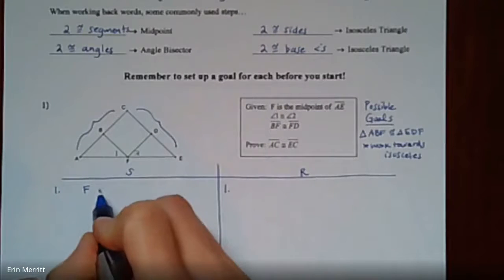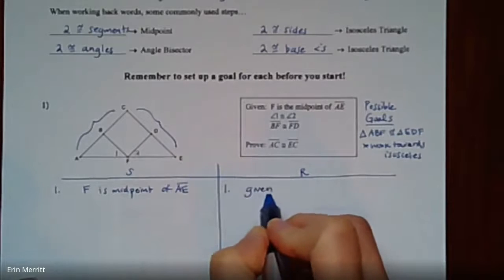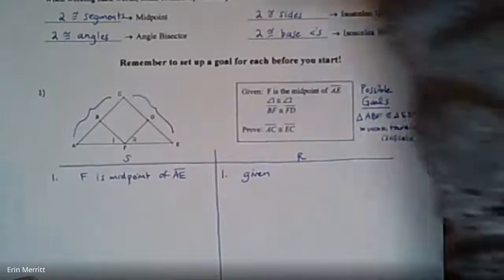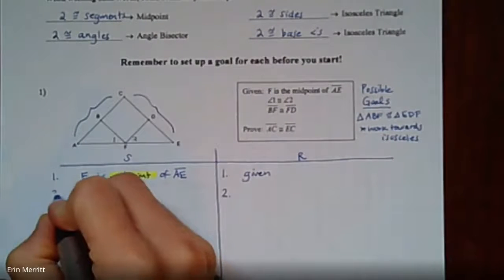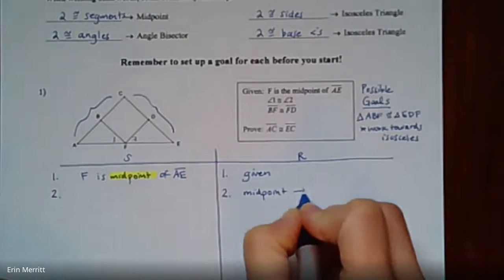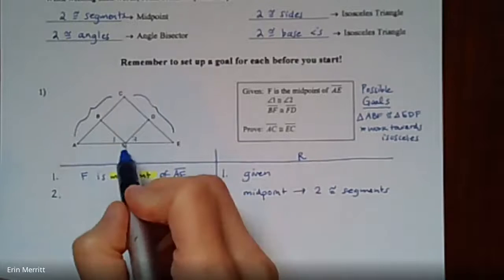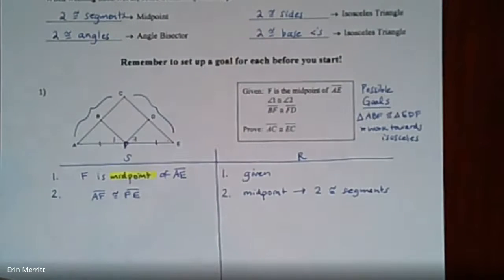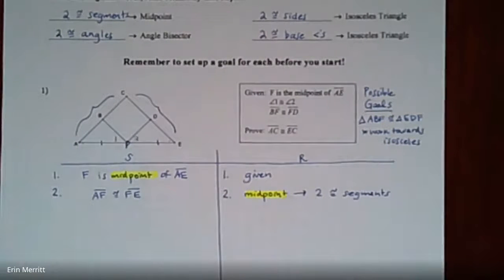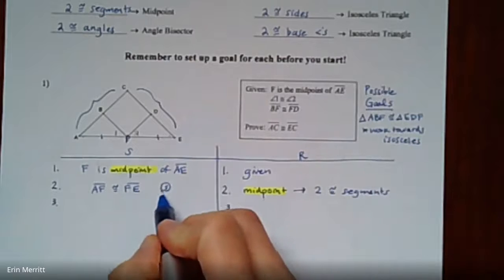Let's see where the givens take us. F is the midpoint of segment AE — that's given. Midpoint is our vocab term, so step two talks about that midpoint: midpoint implies two congruent segments. Looking at the picture, F is the midpoint of AE, so our two congruent segments are AF and FE. That's possibly a pair of sides in the little triangles I was thinking about.